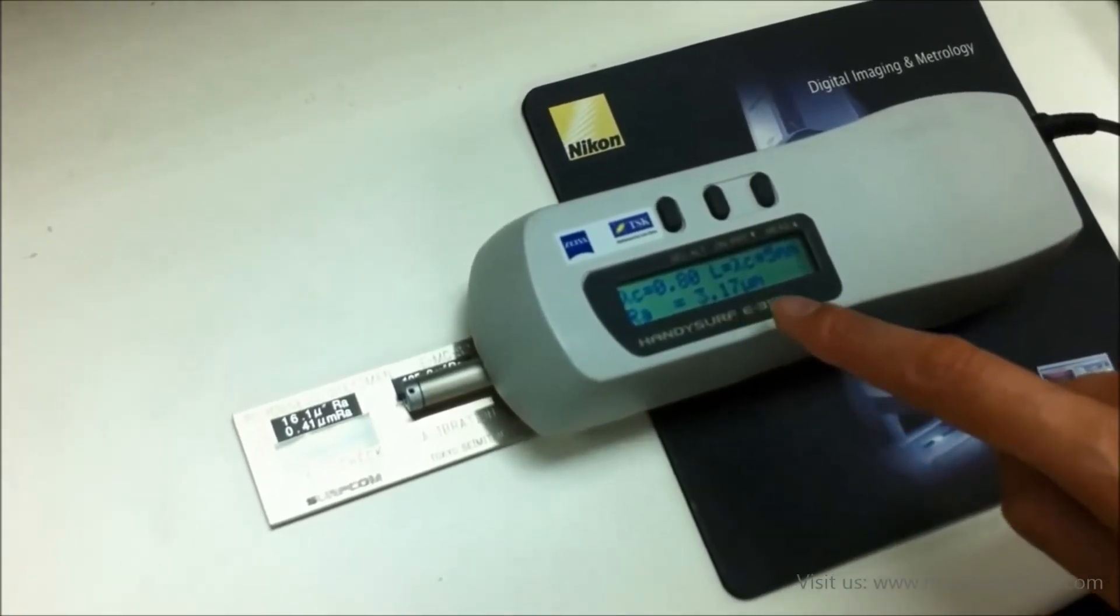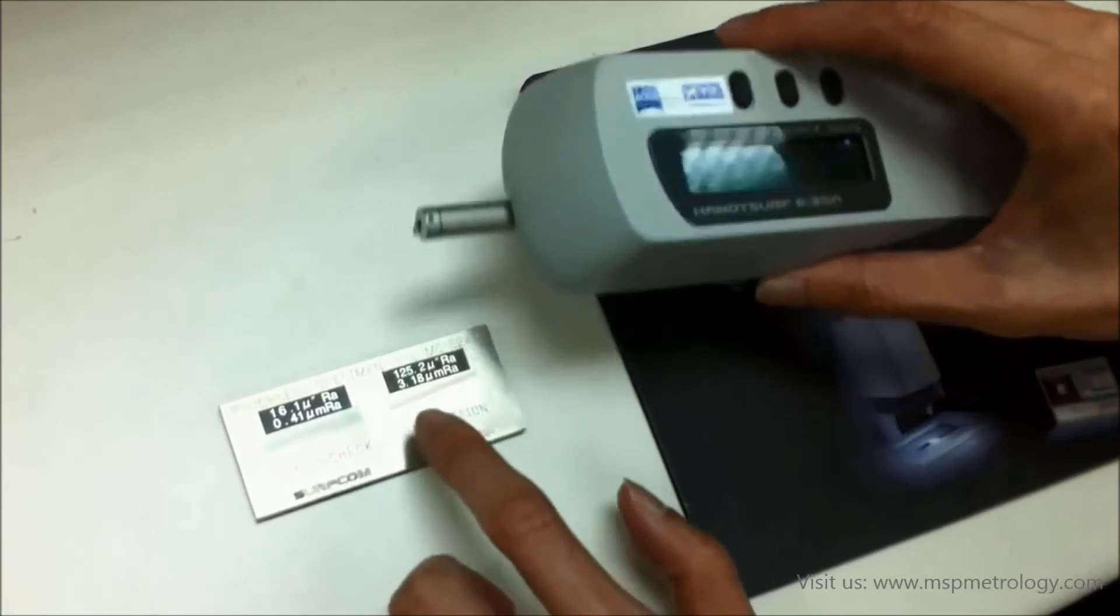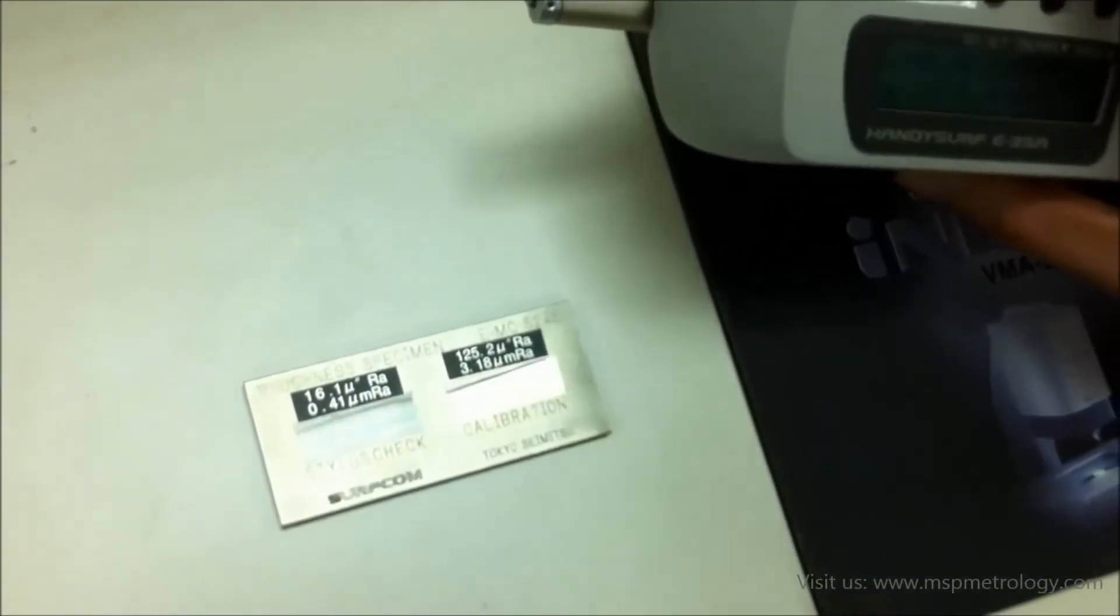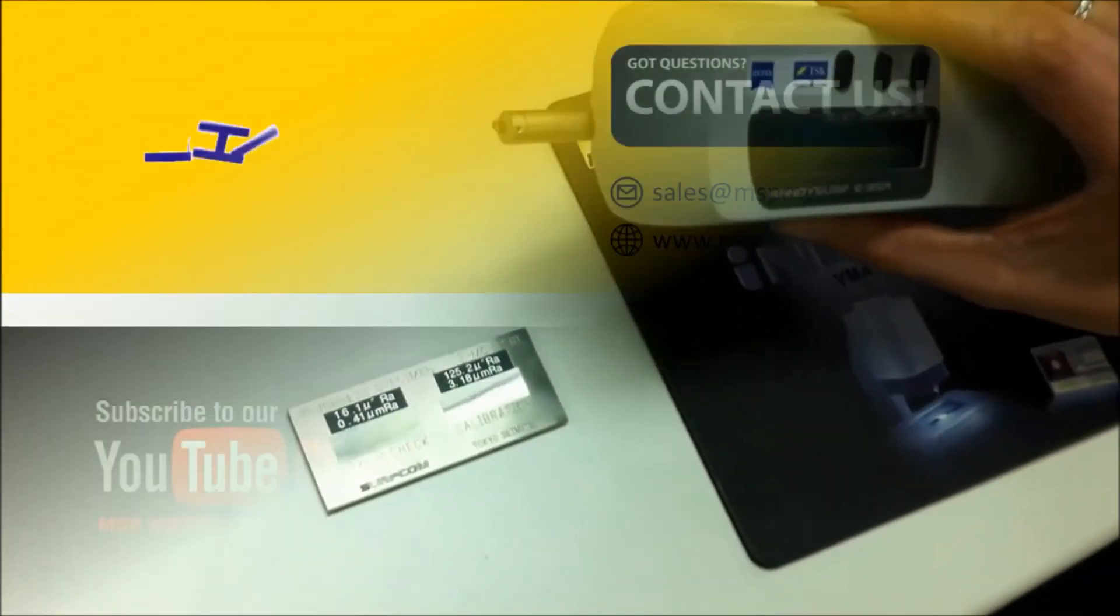The RA is equal to 3.17 microns, which is what the test specimen is also showing, around that value. That's all about the demonstration. Thank you.